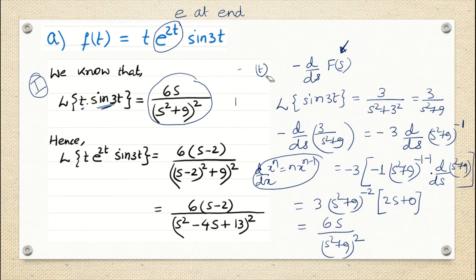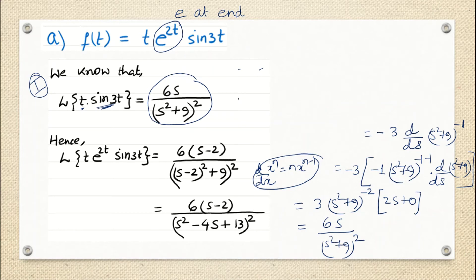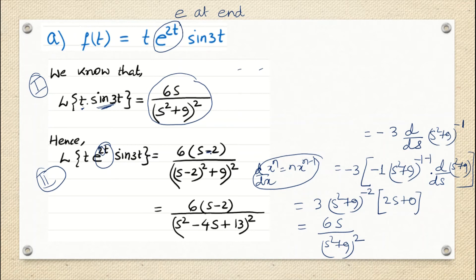Step 1 is done. Now we have to work on step 2 — the effect of e^(at). Recall our 'e at end' strategy. Whenever we find s in the numerator or denominator everywhere, we have to shift that s by a. What is a here? Since we have e raised to 2t, a is 2. The numerator also has s, so we shift s to s minus 2.